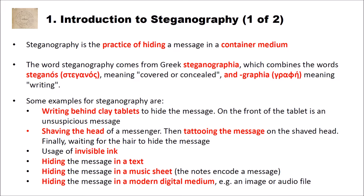Some examples for Steganography are writing behind clay tablets to hide the message. In ancient times, people wrote on the front of clay tablets, but you can hide a message by writing on the back, so the front has an unsuspicious message and the hidden message is on the back. Another example is shaving the head of the messenger, tattooing the message on the shaved head, then waiting until the hair grew again. Clearly this method takes time, so it is not good for urgent messages.